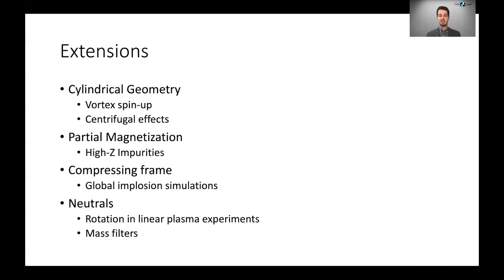And finally, for a somewhat different application, we're looking at the inclusion of neutrals in this code. So linear plasma experiments have a very hard to predict rotation profile, and a lot of this is due to the effect of neutrals and the conductivity associated with those neutrals. So including these neutrals in those codes should allow for us to better predict how linear plasma experiments will rotate, which is important for things like plasma mass filters, which might have application in the separation of nuclear waste.